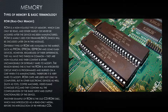Regardless of their differences, they all have two things in common: they are non-volatile and their content is either unchangeable or extremely hard to modify. The reason behind this is that the ROM is an integrated circuit which is programmed and burned on a chip when it is manufactured, making it very hard to modify. ROM chips are used not only in computers but in other electronic devices as well, such as toys, coffee machines, video game consoles, and so on. They contain all the configuration of the basic input and output functionalities of that device.